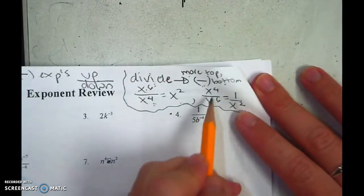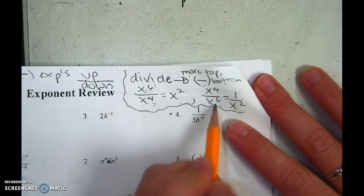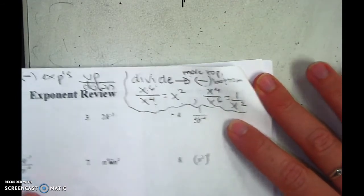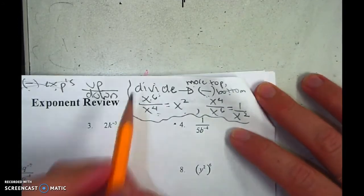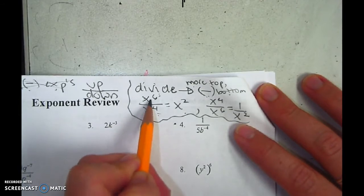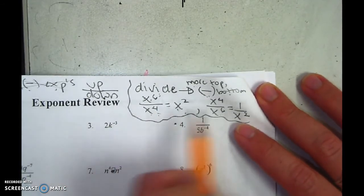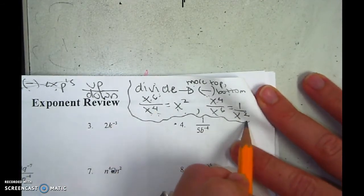But then if you did this one, you would get 4 minus 6, which is a negative number, and you can't have negative exponents. So it's just a lot easier to go, are there more on top or bottom? They're more on top by 2. Are there more on top or bottom? Bottom by 2.